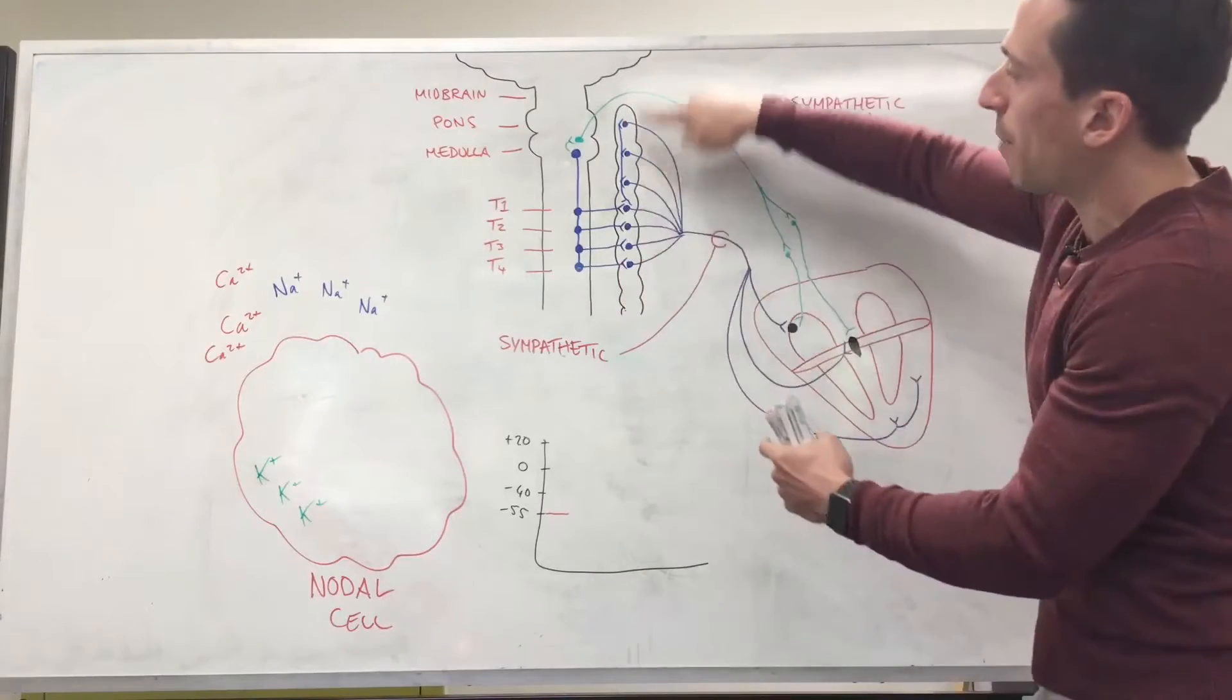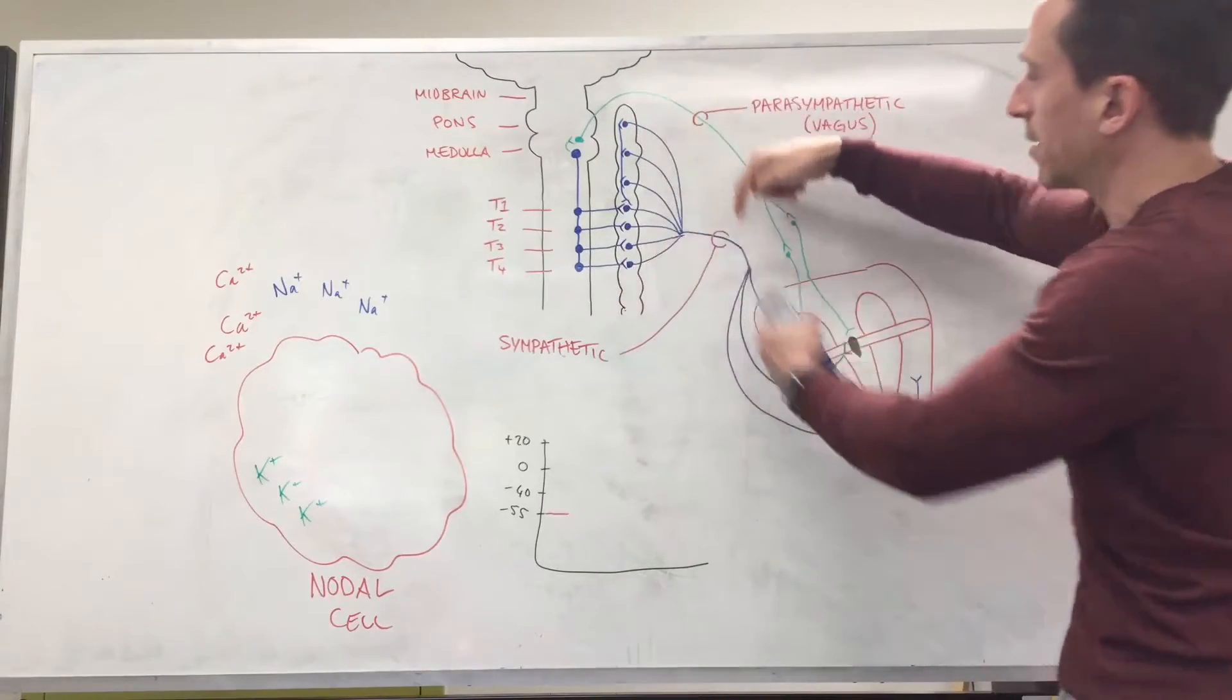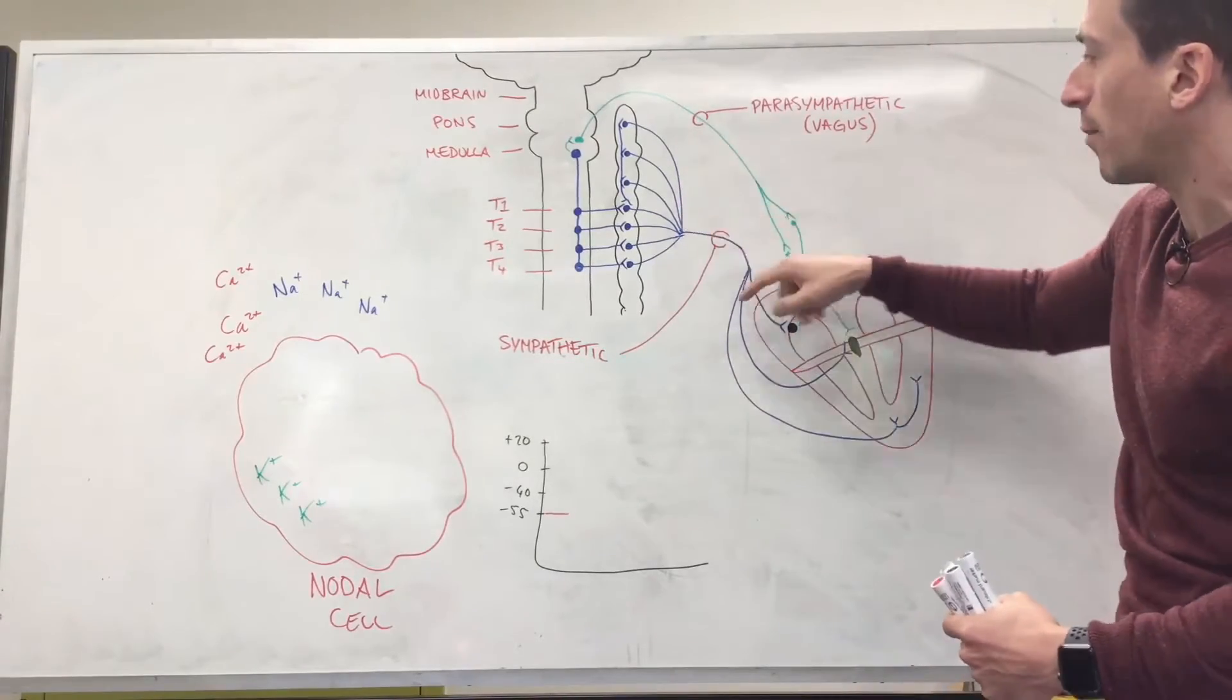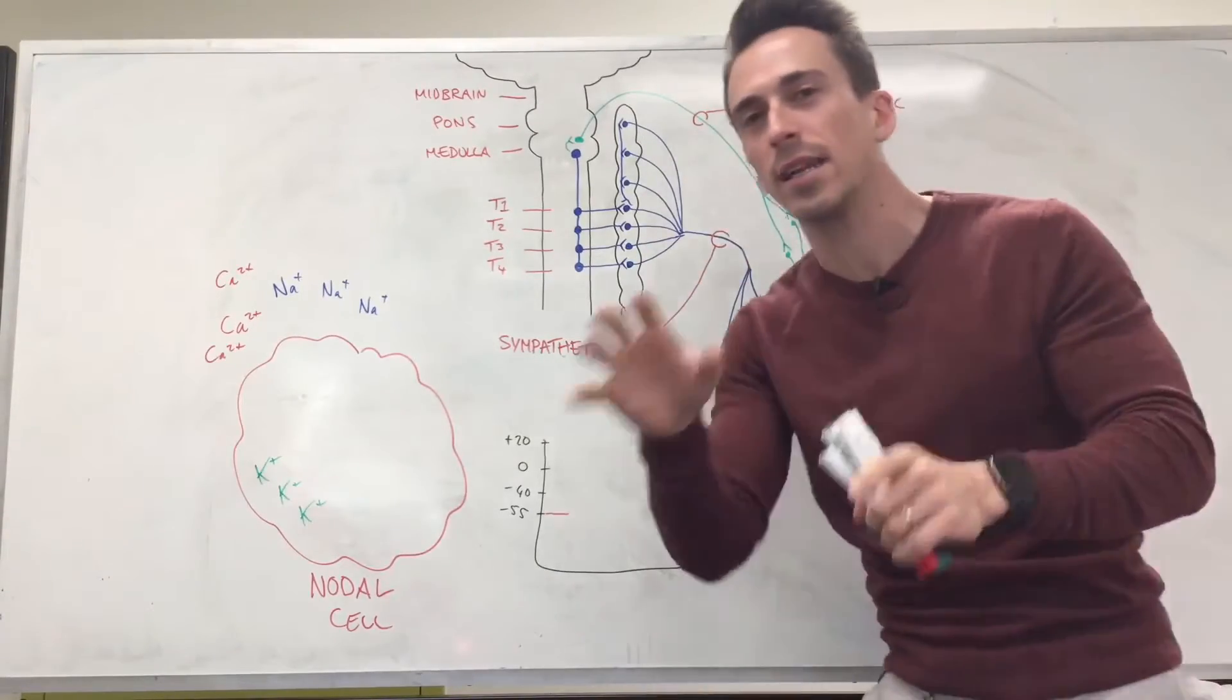Now they go up and down and they send their signals out going towards the heart. This is a sympathetic nerve fiber or nerve fibers going into the heart. Where does it innervate?